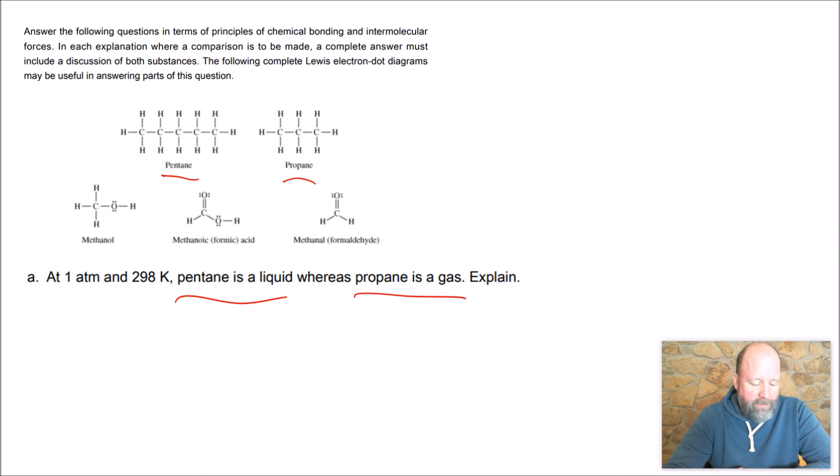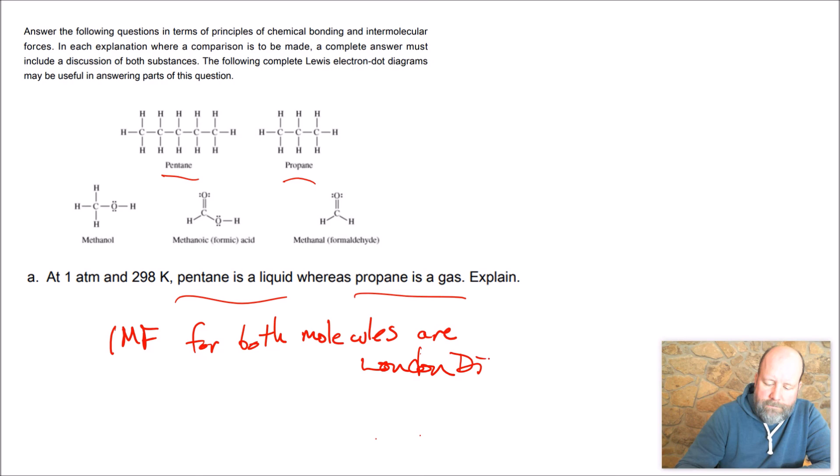There are no polar bonds on here at all. The electronegativity of carbon and hydrogen is the same. So this is an intermolecular forces question. The intermolecular forces for both pentane and propane, both molecules are just London dispersion. They're just London dispersion.